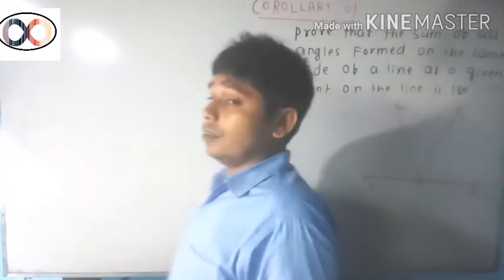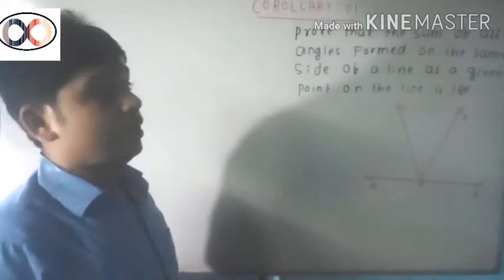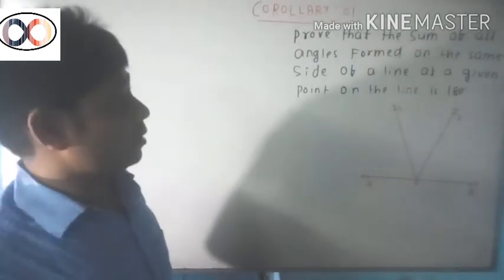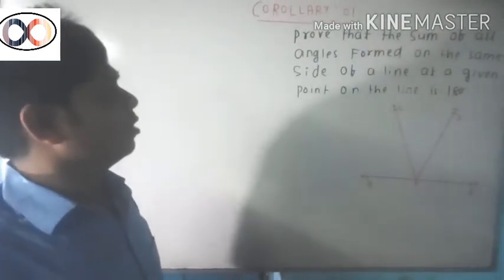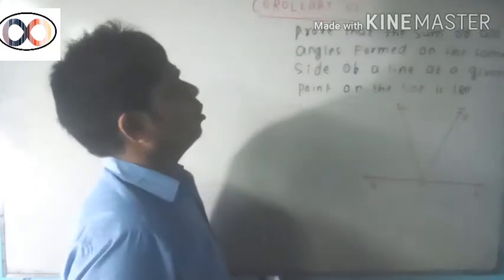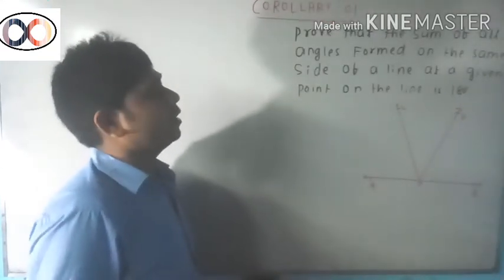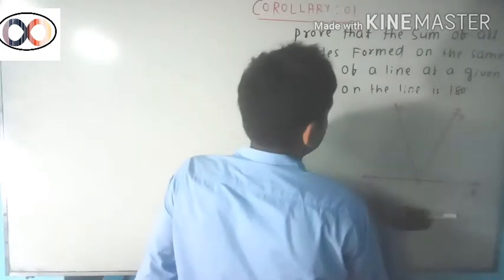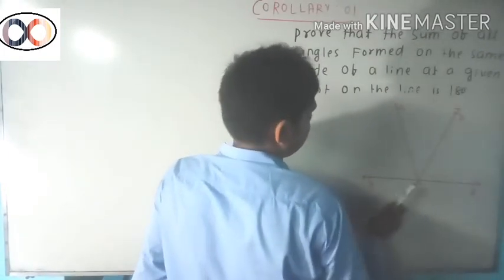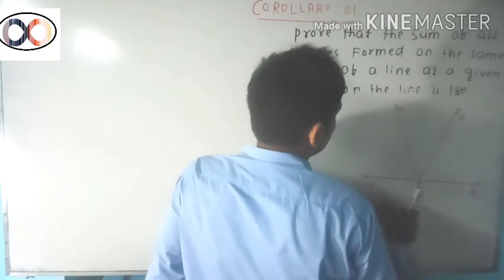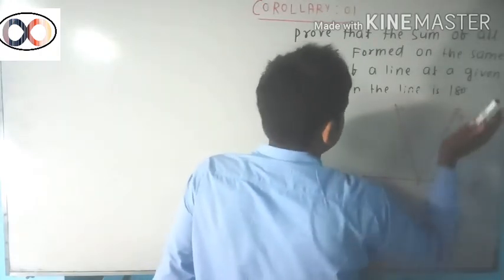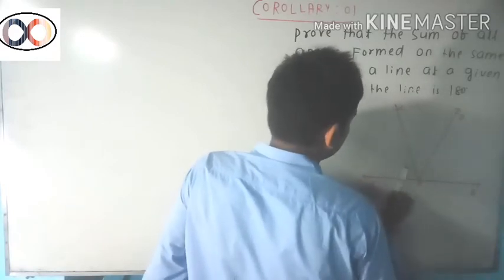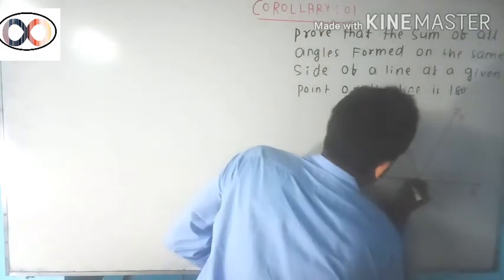Hello students, today we are going to discuss some corollaries regarding linear pair axioms. We will discuss two corollaries of linear pair of angles axioms. The sum of all the angles formed on the same side of a line at a given point on the line is 180 degrees.